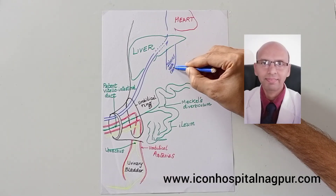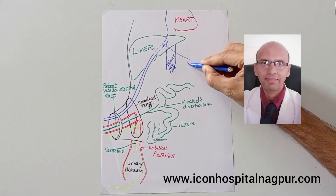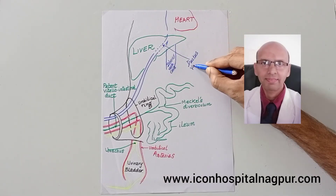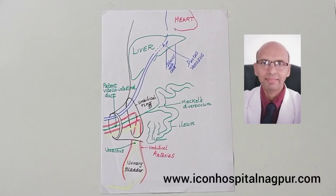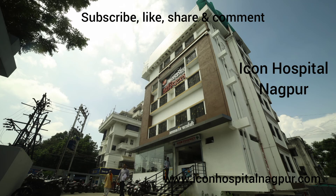That is the inferior vena cava, and that is the ductus venosus. The ductus venosus, umbilical arteries, vitelointestinal duct, and urachus — all these structures get obliterated. For more information, please subscribe to my channel, like, share, and comment. Thank you.